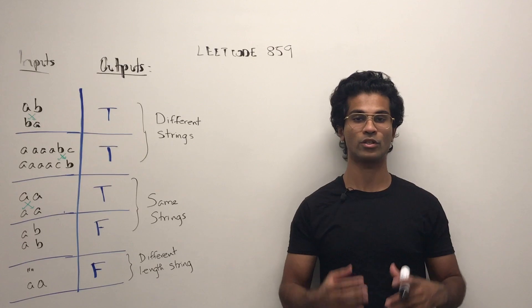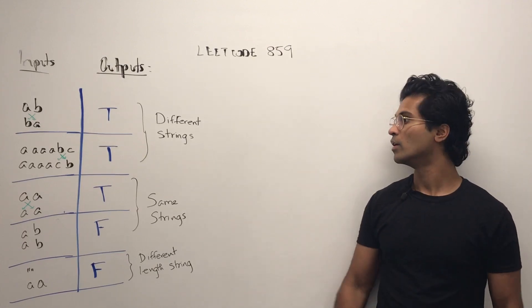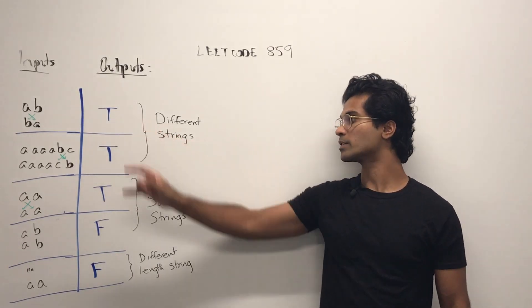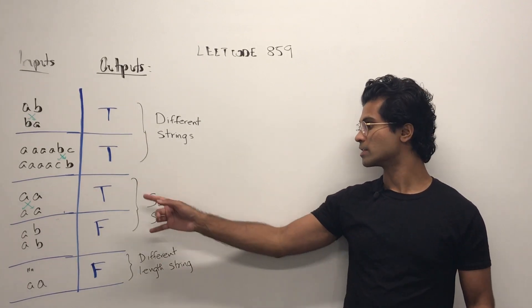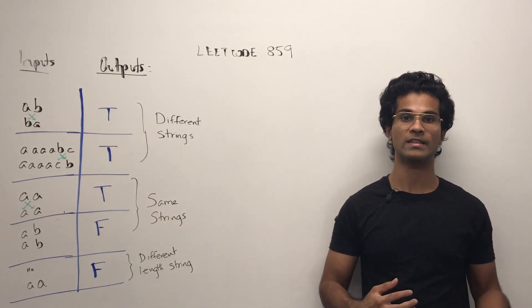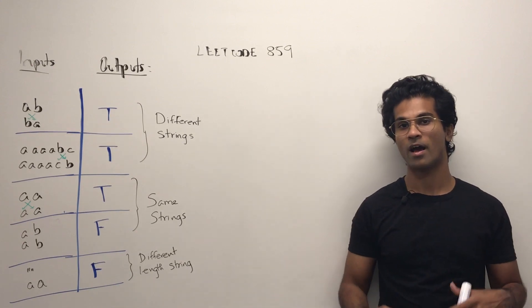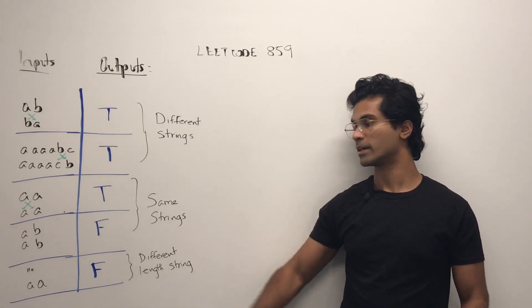The input is actually split into three categories. We can have either different strings and then we check to see if we can swap them, or we could have the same strings and then we see if there's any duplicates or not. And finally we have different length strings.